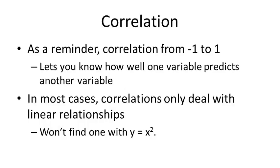As a reminder, we're going to be talking about correlation throughout this lecture. Correlation goes from negative one to one and lets you know how well one variable can predict another variable. It doesn't tell you anything causal, but it does let you know how well it can predict. In most cases, correlation only deals with linear relationships, so something like y equals x squared is going to give you a really bad correlation even though there's a clear relationship between the two.